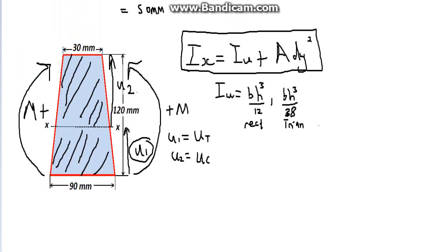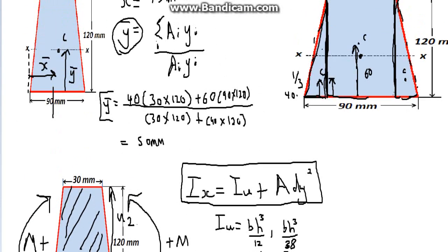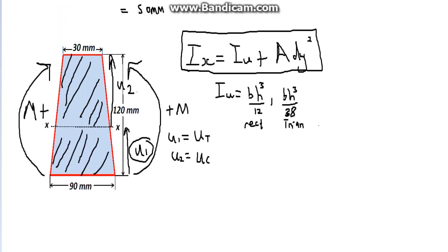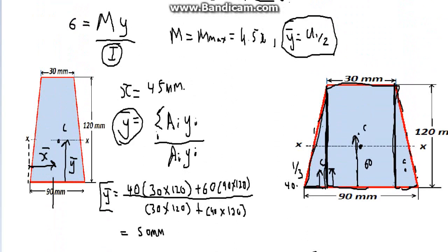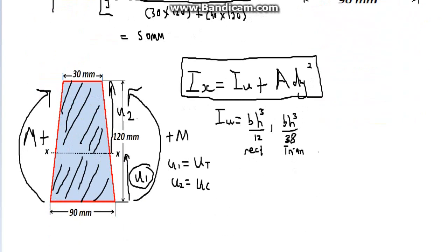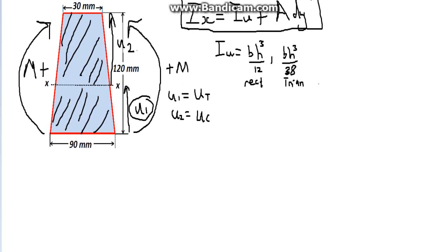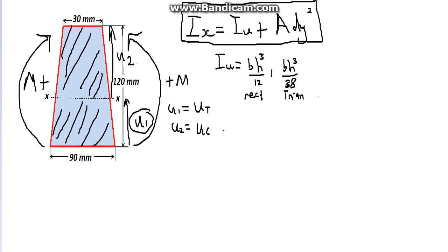Let's start applying the parallel axis theorem for each part of the cross-section of the beam. For the first part, the triangle. Let's start doing some maths here. The parallel axis theorem equals...